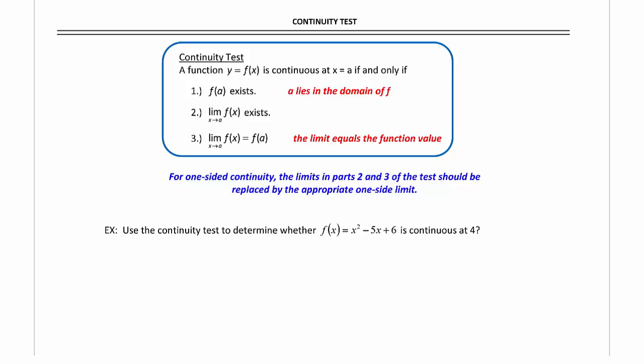First, f of a exists. Second, the limit as x approaches a of f of x exists, and third, the limit as x approaches a of f of x is equal to f of a.